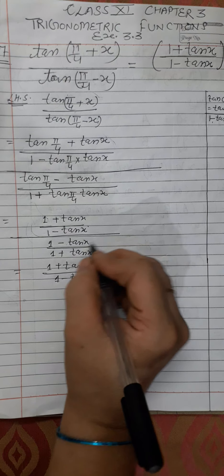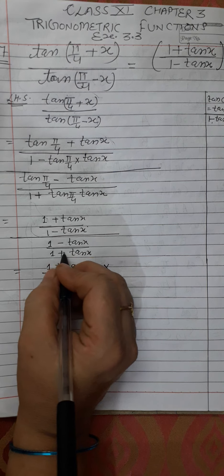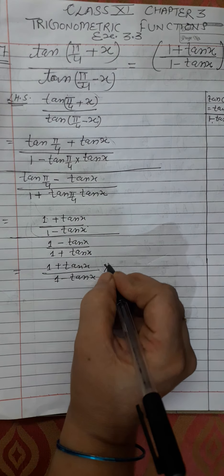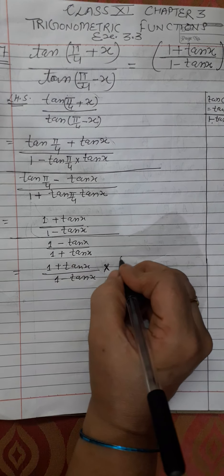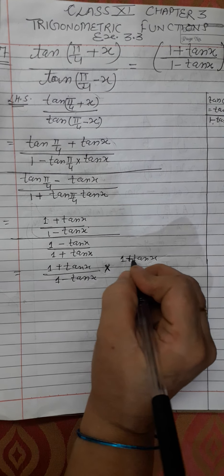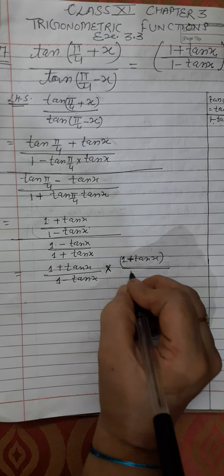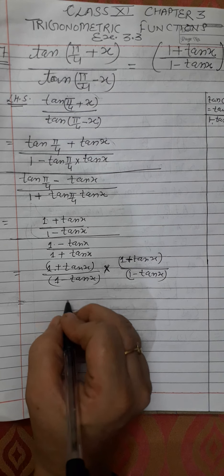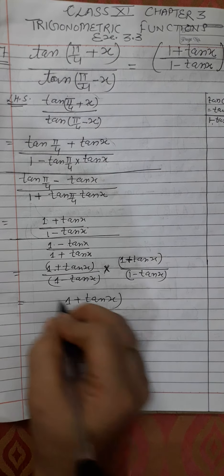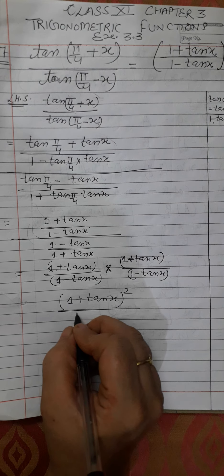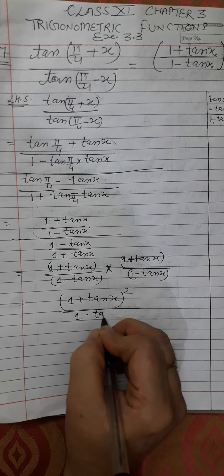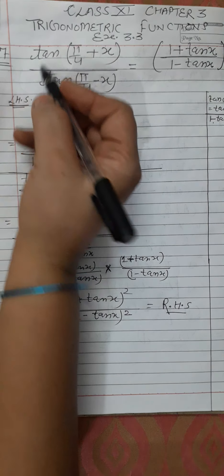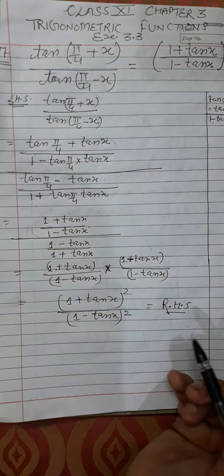Now we have a fraction divided by another fraction. We write the numerator as it is — (1 + tanx)/(1 − tanx) — and take the reciprocal of the denominator, which gives (1 + tanx) up top and (1 − tanx) below. So we have (1 + tanx)·(1 + tanx) in the numerator and (1 − tanx)·(1 − tanx) in the denominator, giving us [(1 + tanx)/(1 − tanx)]² — which is our right-hand side. Left-hand side equals right-hand side, proved.